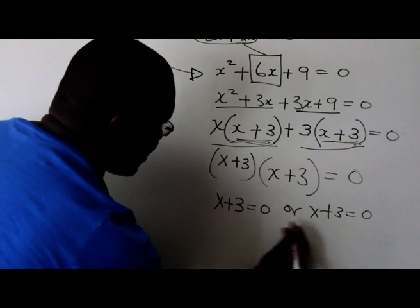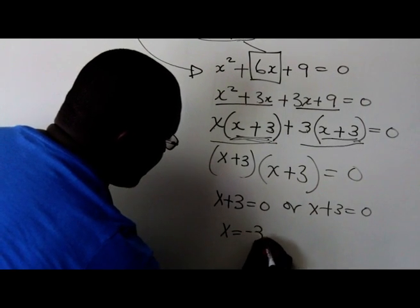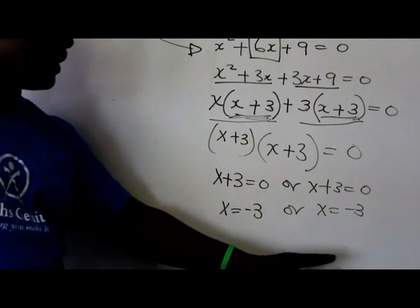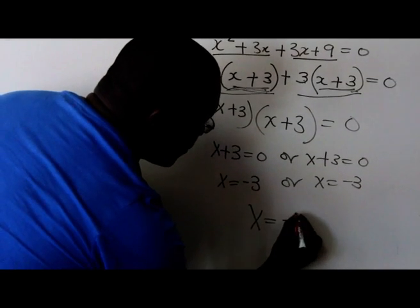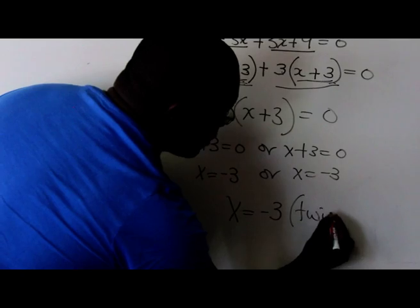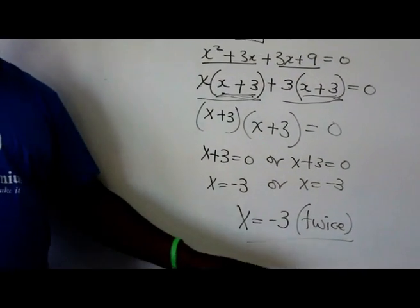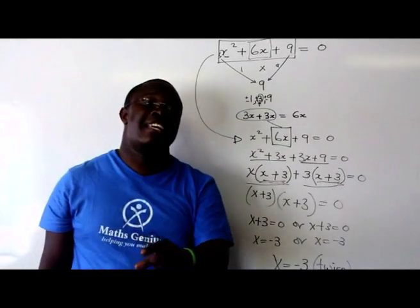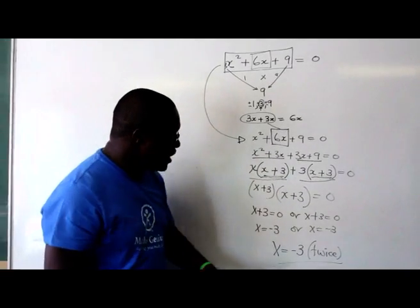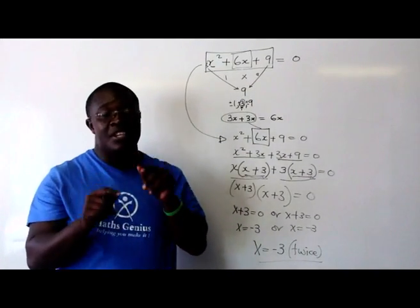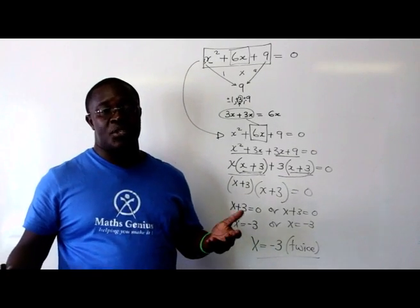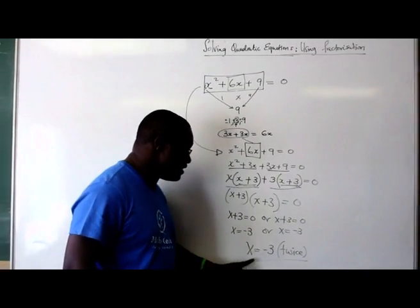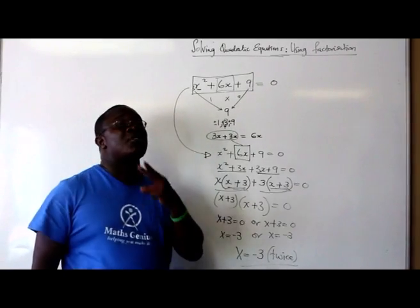You will get the same answer: x equals negative 3 or x equals negative 3. It's redundant to write x equals negative 3 twice, so you just say x equals negative 3 — but note it occurs twice. It's always important to indicate this, because a quadratic equation has two solutions. If you don't note it twice, you've lost a solution. It should always have two solutions and two roots. In this case, the roots are negative 3, but it occurs twice.